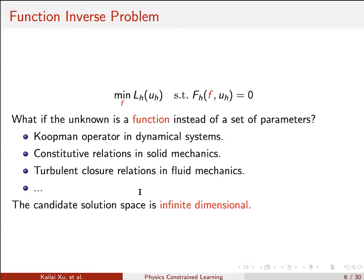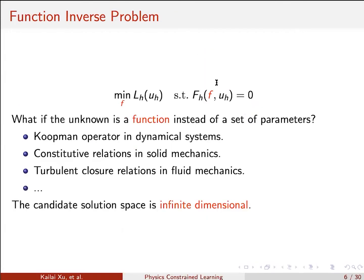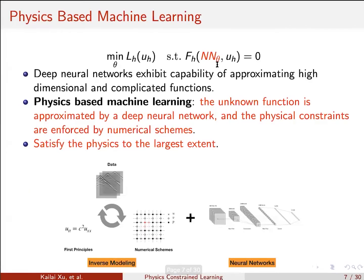The problem here is that the candidate solution space — that is the space F_θ — is infinite-dimensional. The idea, very similar to what Chris just talked about, is that you want to preserve the physics, but for the unknown portion of your model, you can substitute your unknown function using a neural network. In this way, you reduce your function inverse problem to a parameter inverse problem.